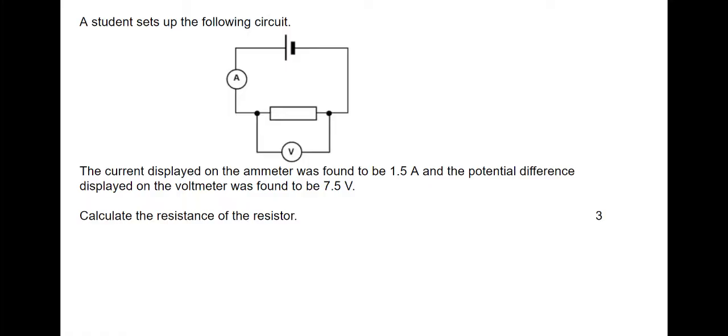Here's an example of a question. A student sets up the following circuit. The current displayed on the ammeter was found to be 1.5 amps and the potential difference displayed on the voltmeter was found to be 7.5 volts. Calculate the resistance of the resistor.